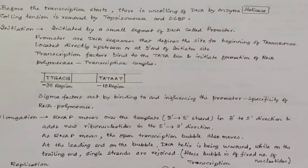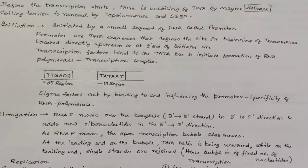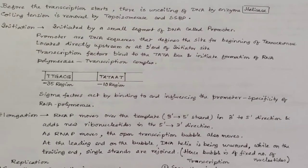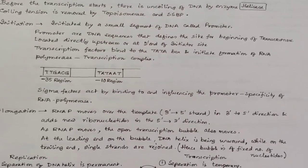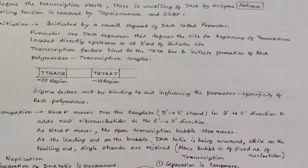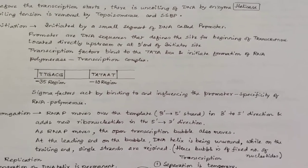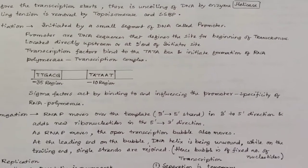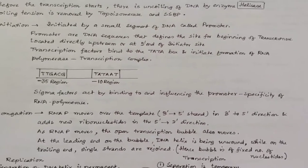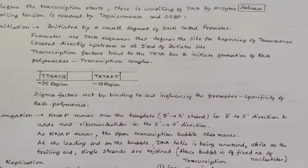Then we come to elongation. Here, RNA polymerase moves over the template (3' to 5' strand), called the template strand, in the 3' to 5' direction and adds new ribonucleotides in the 5' to 3' direction.